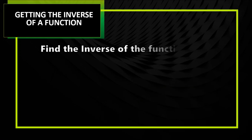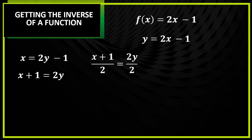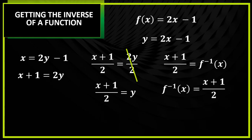Next example: find the inverse of the function f of x is equal to 2x minus 1. Same steps — change f of x to y, then interchange y and x, then solve for y. Transpose negative 1, magiging x plus 1. After that, divide by 2 kasi hindi pa pwedeng may kasama yung y — so cancel yung 2, maiwan na lang is x plus 1 over 2 equals y. Then change y to f⁻¹ of x, and this will be the inverse of our function.